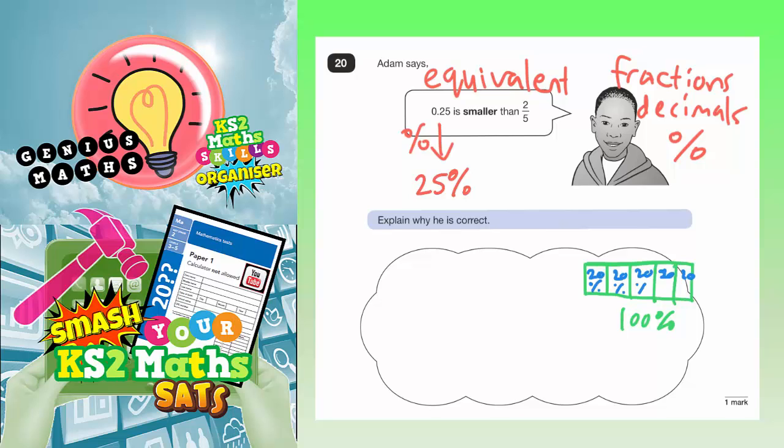So each fifth is 20%. But obviously this says two-fifths. So two-fifths is going to be two out of these five bits. So if one-fifth is 20%, then two-fifths must be 40%. And as you can see, it's these two put together. So 20 and 20 makes 40%. Therefore, two-fifths is 40%.